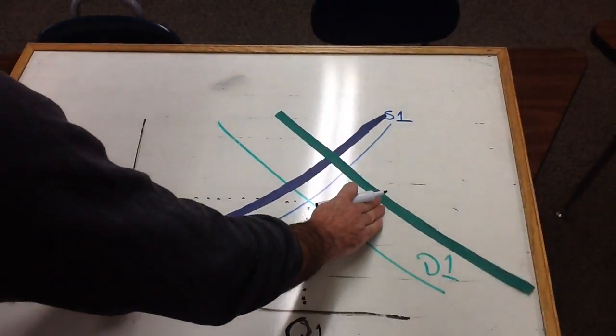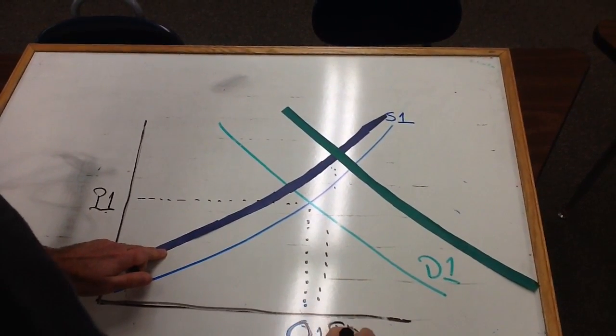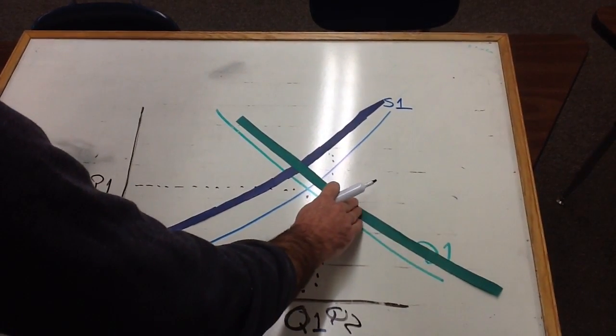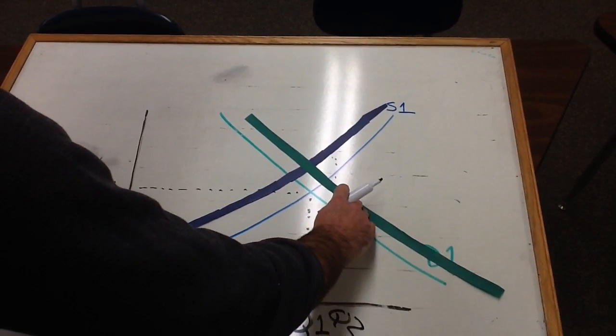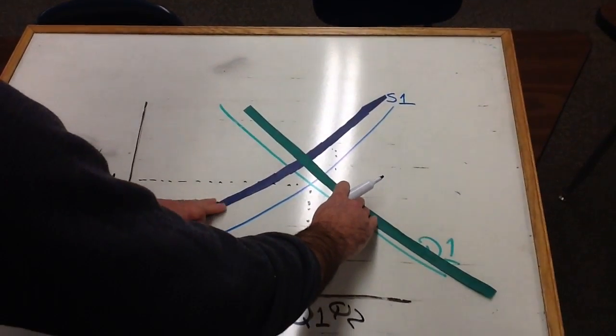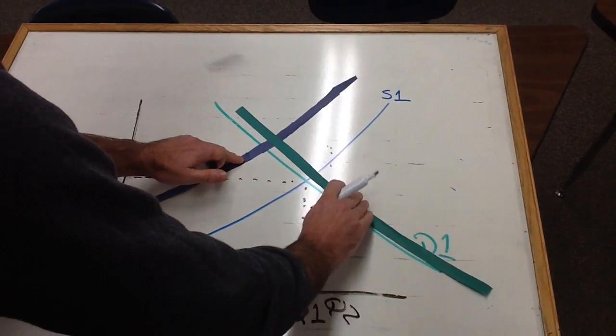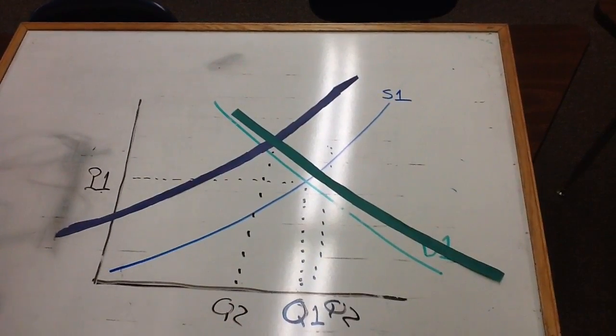Maybe if demand goes all the way up here, then our new quantity, our Q2 is here. But if demand only increased, if supply had gone up this much, and demand only increased this much, then our quantity decreased.